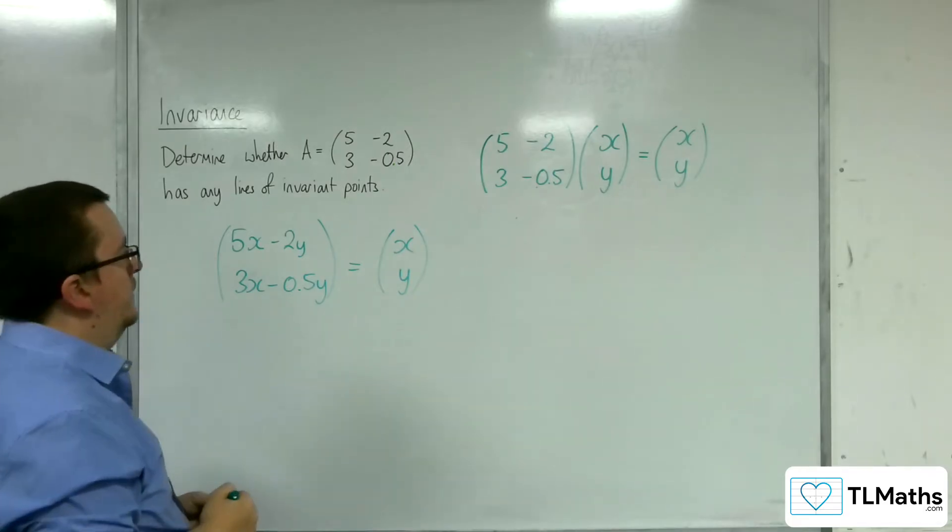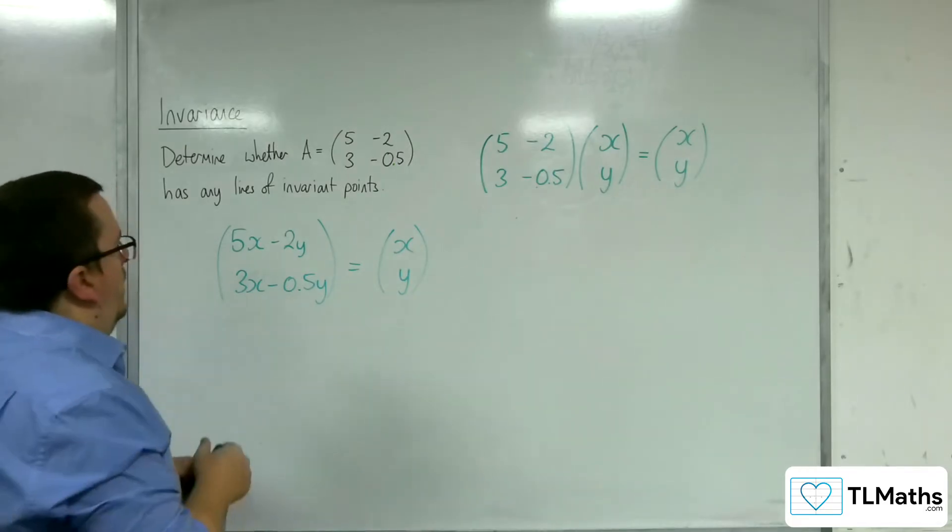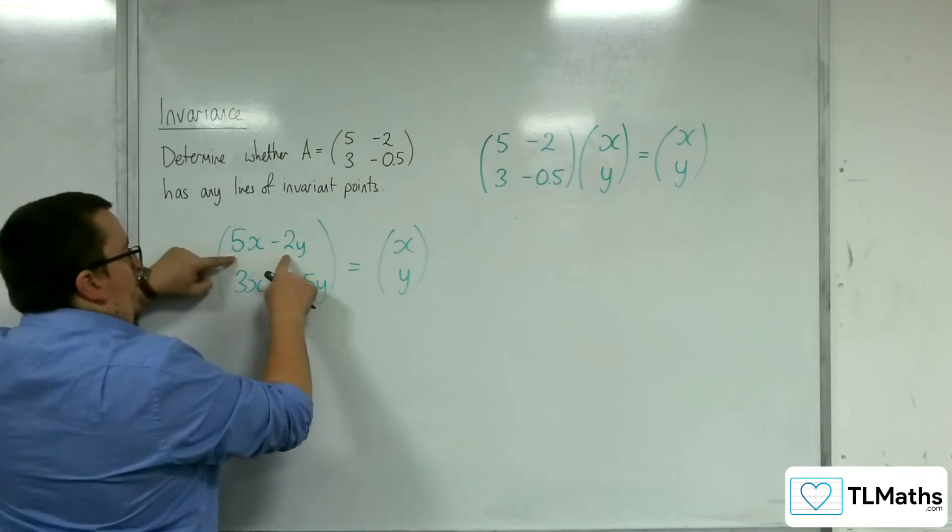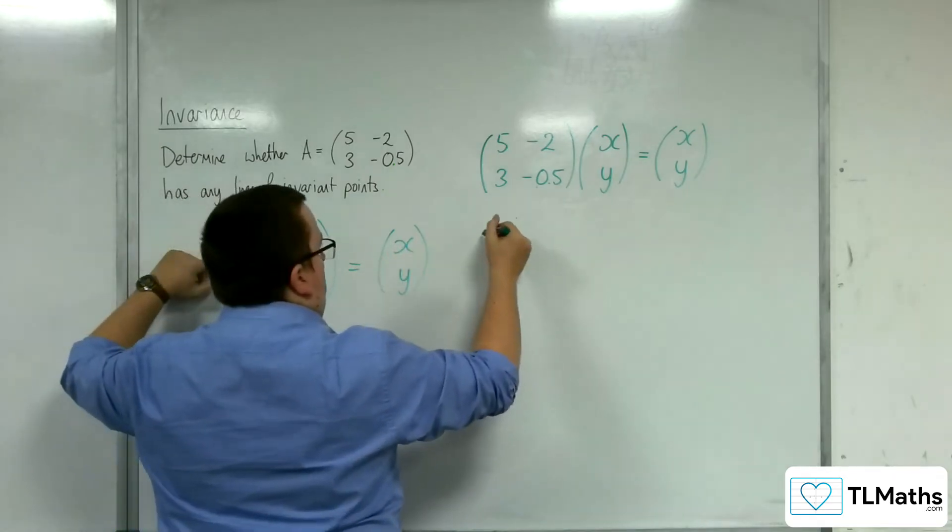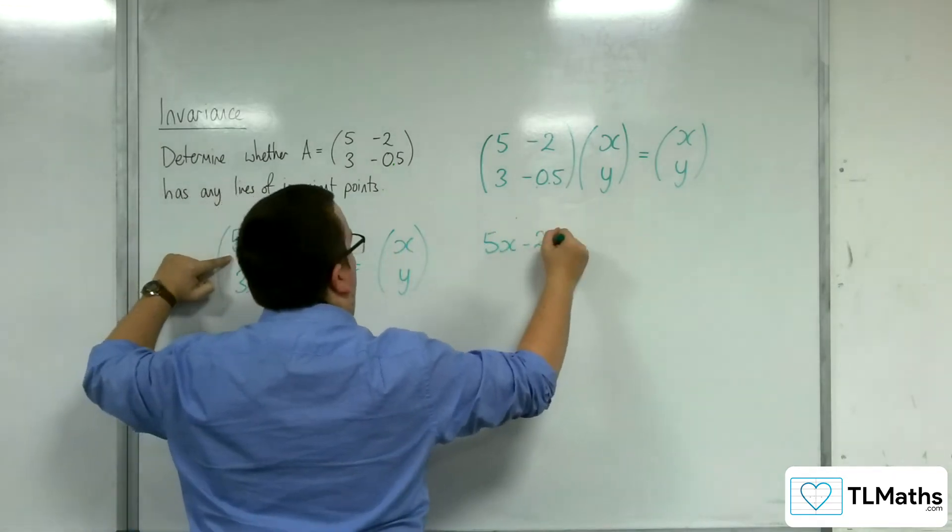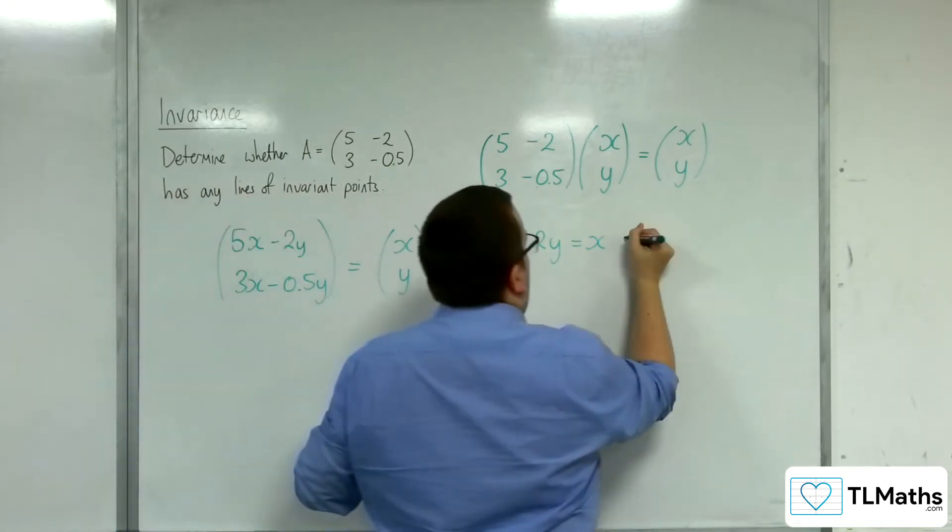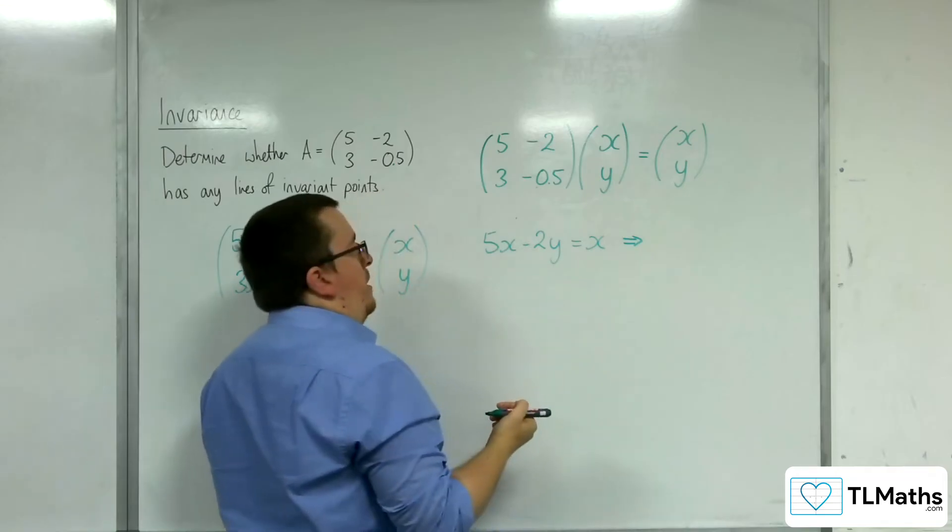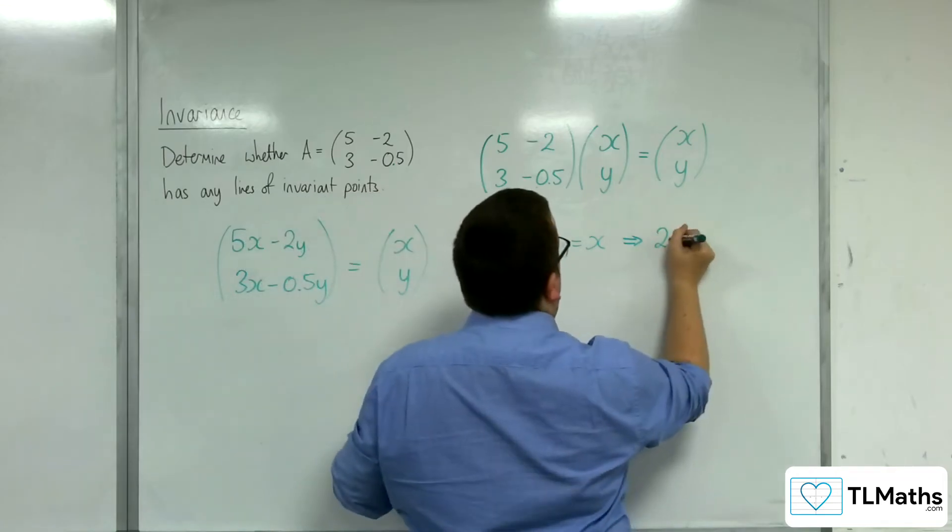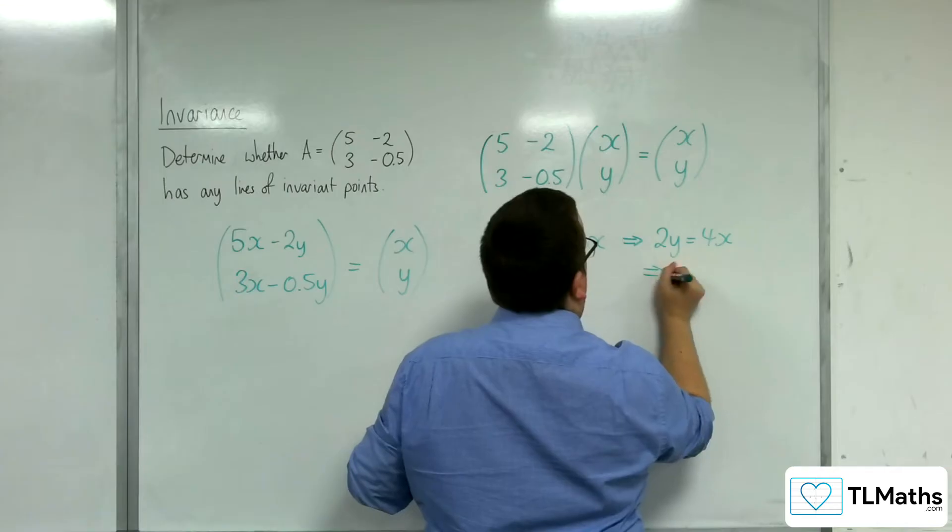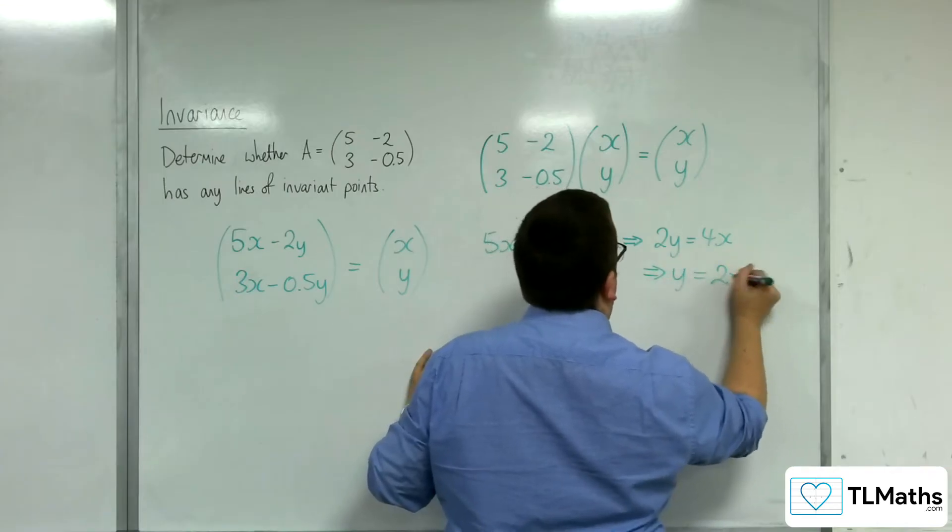So the 5x minus 2y has got to be equal to x. That top row has got to be consistent. That means if I rearrange that, I get 2y equals 4x. So y equals 2x.